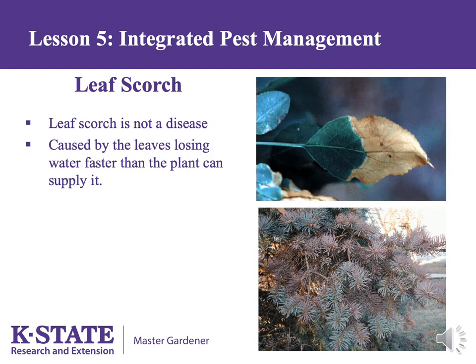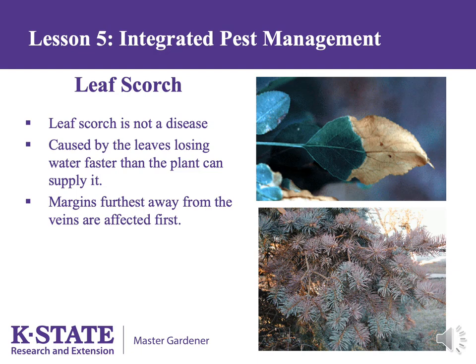Leaf scorch is not caused by a disease, but rather is due to leaves losing moisture faster than the root system can supply it. Though most often caused by a lack of soil moisture, it can also be due to too much water — saturated soils drive oxygen from the soil, and roots need oxygen as much as they need water. A third cause is high winds, resulting in leaves losing water so quickly the root system can't keep up. In leaf scorch, the margins furthest from the base of the leaf are often affected first. With evergreens such as pines, extended droughts can cause needle tips to brown or treetops to die.